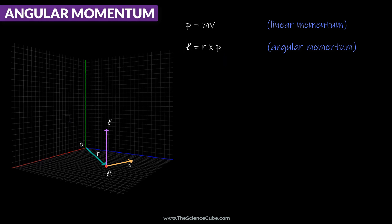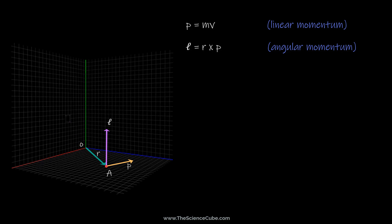A couple of things to observe here: first, r is the position vector of the particle with respect to origin O. Second, we always find angular momentum with respect to a point, and here it is the origin. So stating that a particle has, say, two units of angular momentum is incomplete without specifying the reference point, such as point A, B, or X.